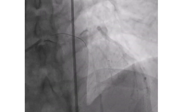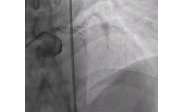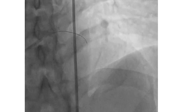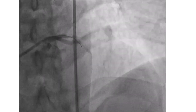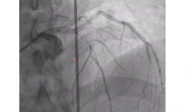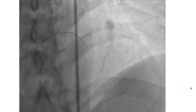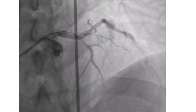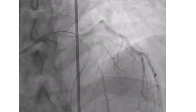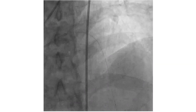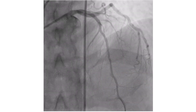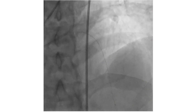Here we can either keep the wire in place and take another wire, or try to redirect the wire. Multiple redirections were needed in this case to pass into the true lumen. And then finally, it was successful in doing PCI for the patient.